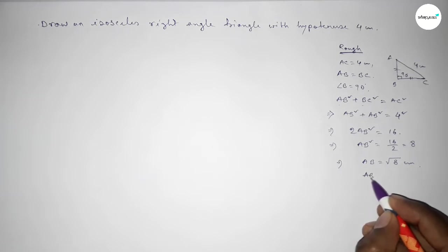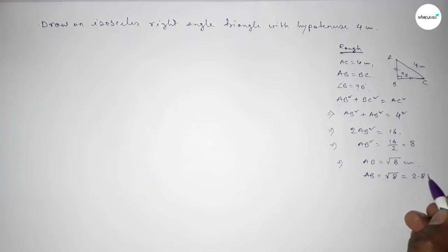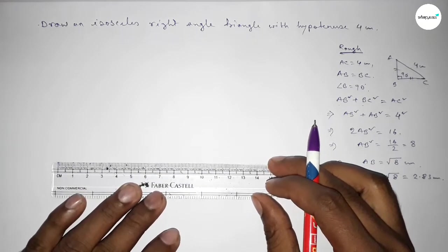AB equal to root over 8, and root over 8 equal to 2.8 centimeter approximately. Now we have to draw the triangle.